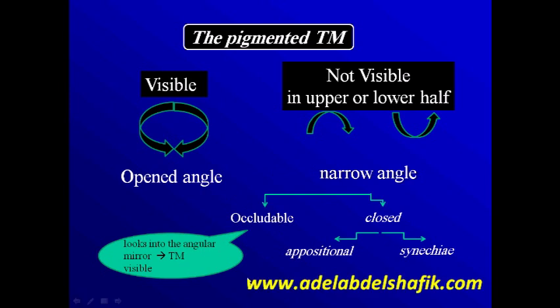For an occludable angle, if you ask the patient to rotate his eye toward the mirror you are using for examination and you start to see the trabecular meshwork, then it's an occludable angle — there is some space between the iris and the trabecular meshwork that can only be seen when the patient moves his eye. To differentiate between apposition and synechial closure, in both you don't see the angle even when the patient moves his eye, so you need to do indentation to differentiate between these two situations.